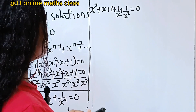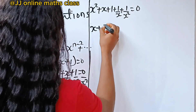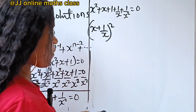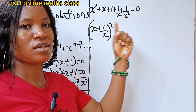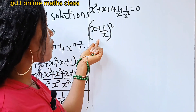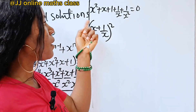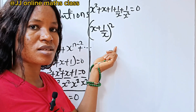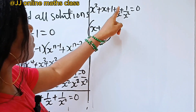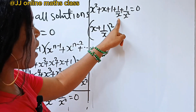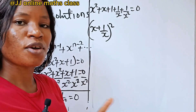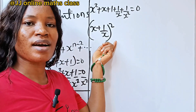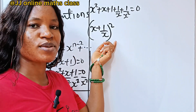We need to work with x plus 1 over x squared. Let's first see what this gives us and then manipulate things to match. Since we already have x plus 1 over x here, just follow along and see how we're going to do it.